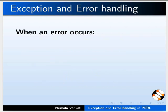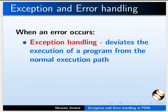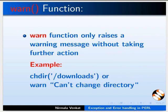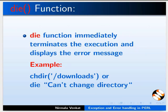When an error occurs, exception handling deviates the execution of a program from the normal execution path. Error handling helps to recover the program without terminating the application. We can identify and trap an error in a number of ways. The WARN function only raises a warning message without taking further action. The DIE function immediately terminates the execution and displays the error message.